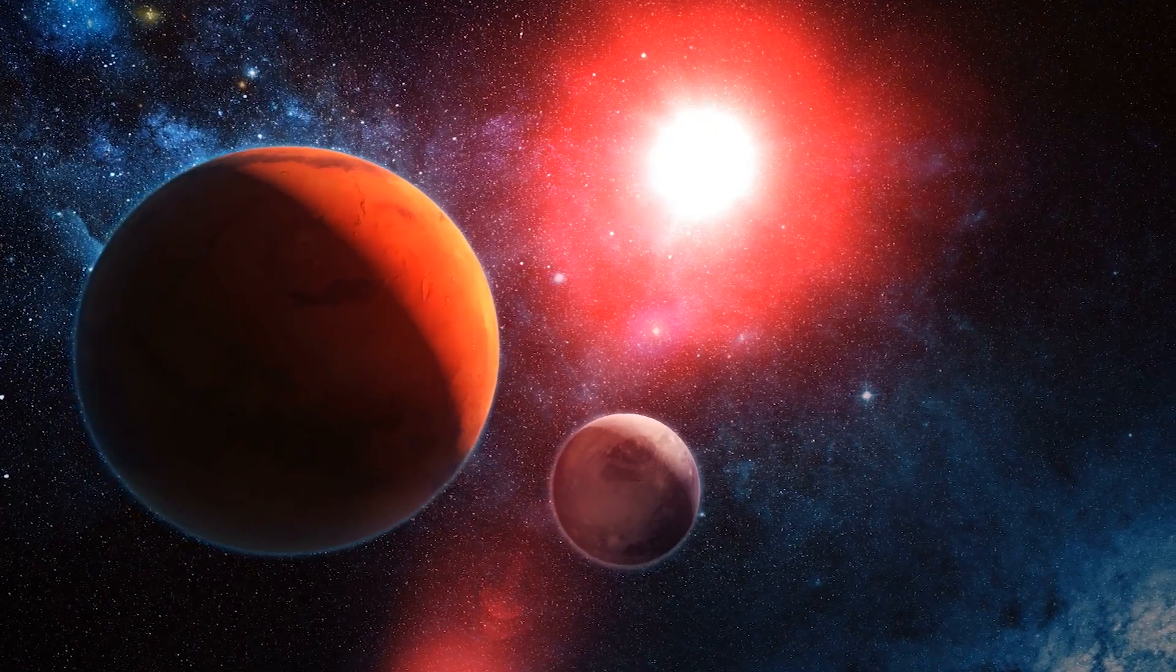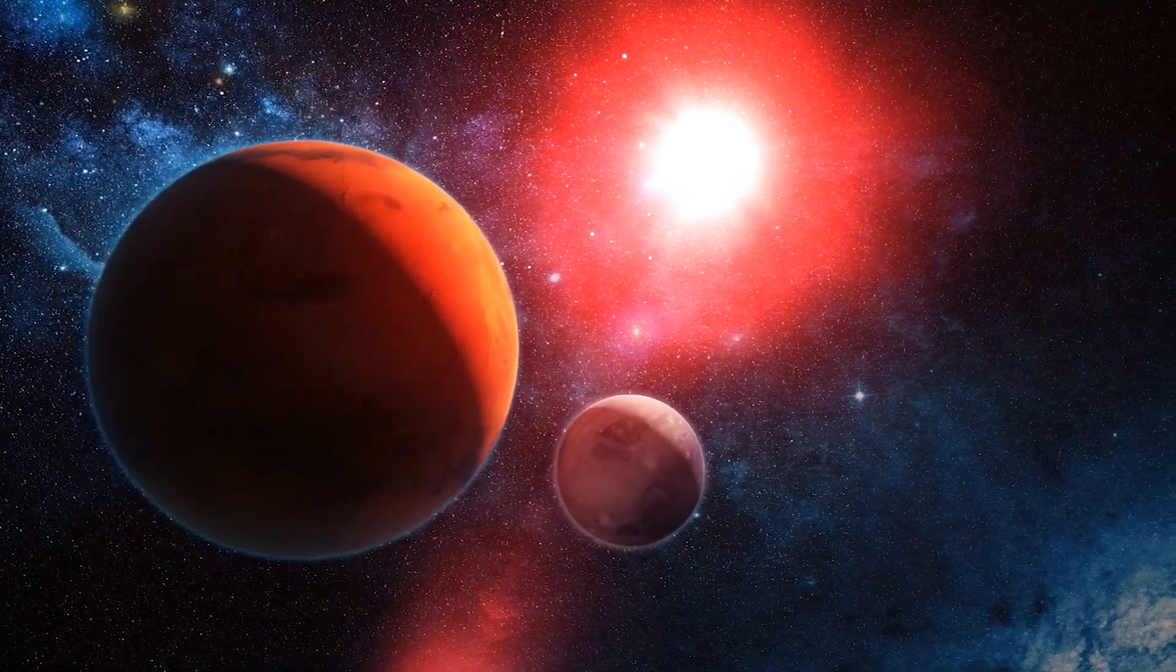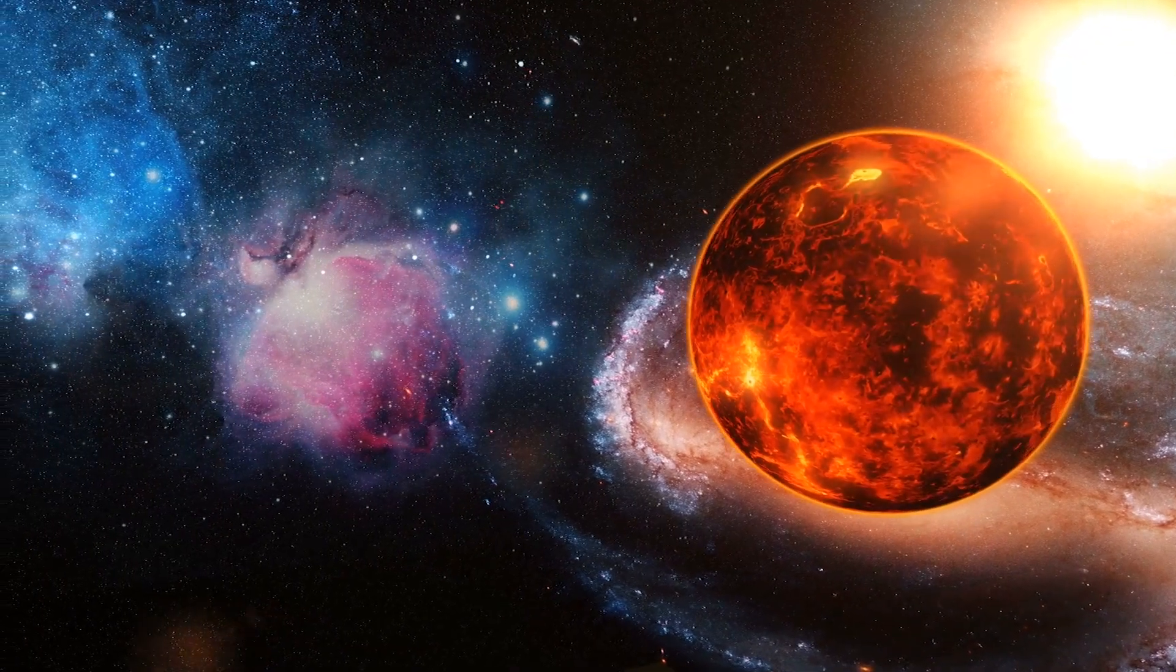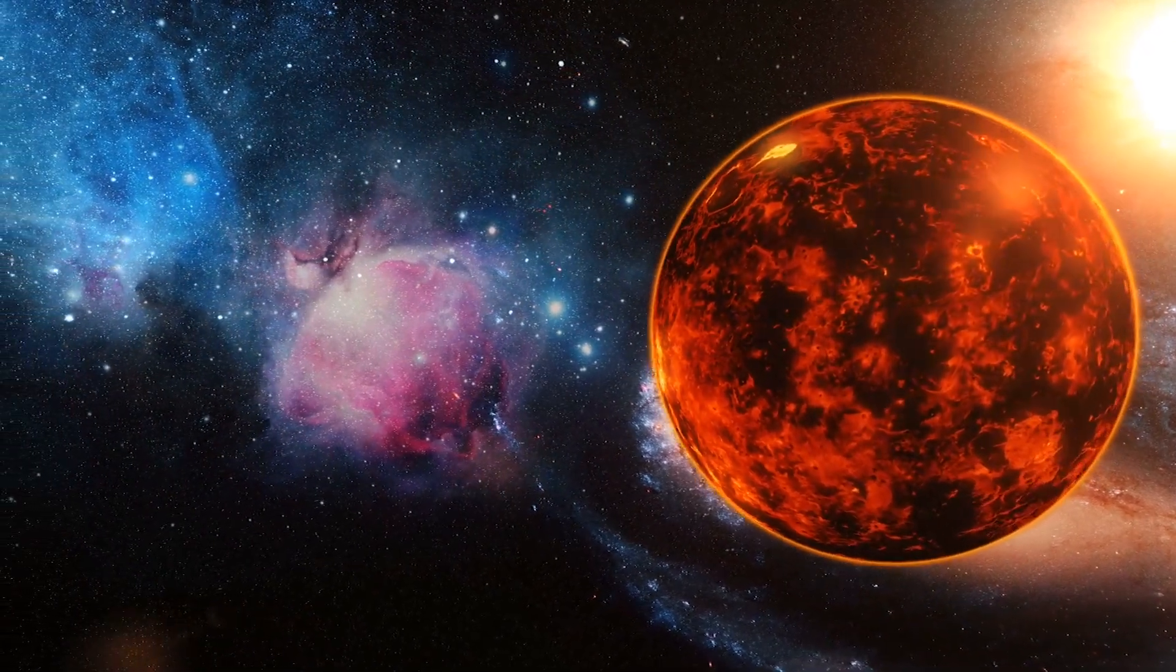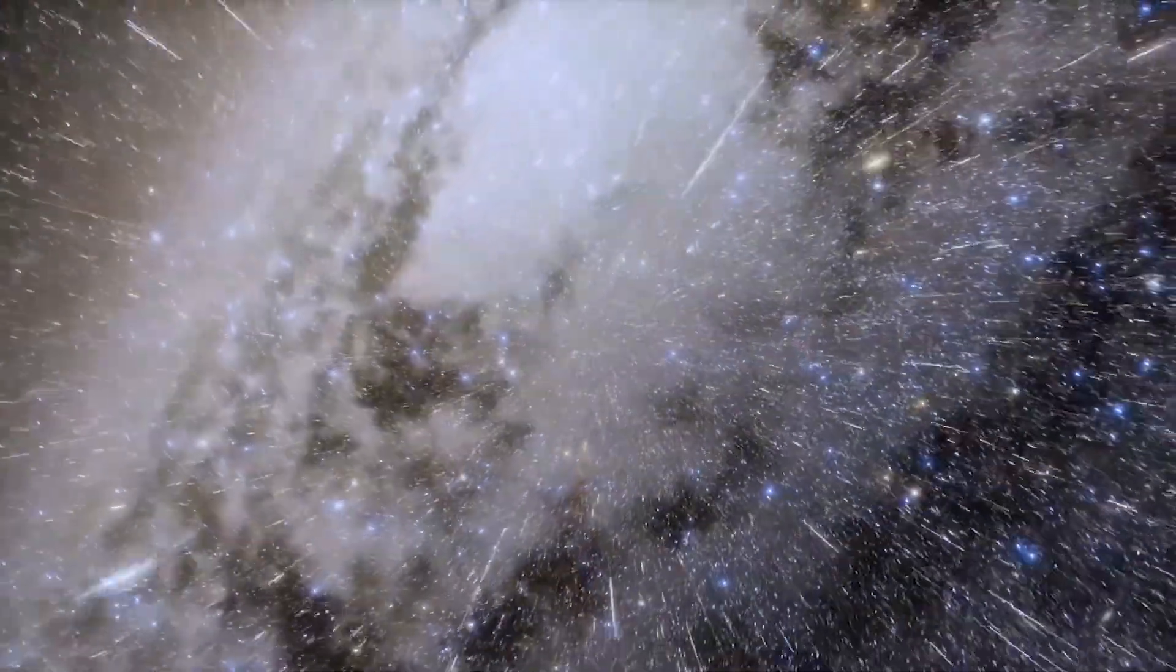Galaxies have halos. The Andromeda galaxy has a very large halo. Scientists were surprised to find that this tenuous, nearly invisible halo, a diffused plasma, extends 1.3 million light years from the galaxy.